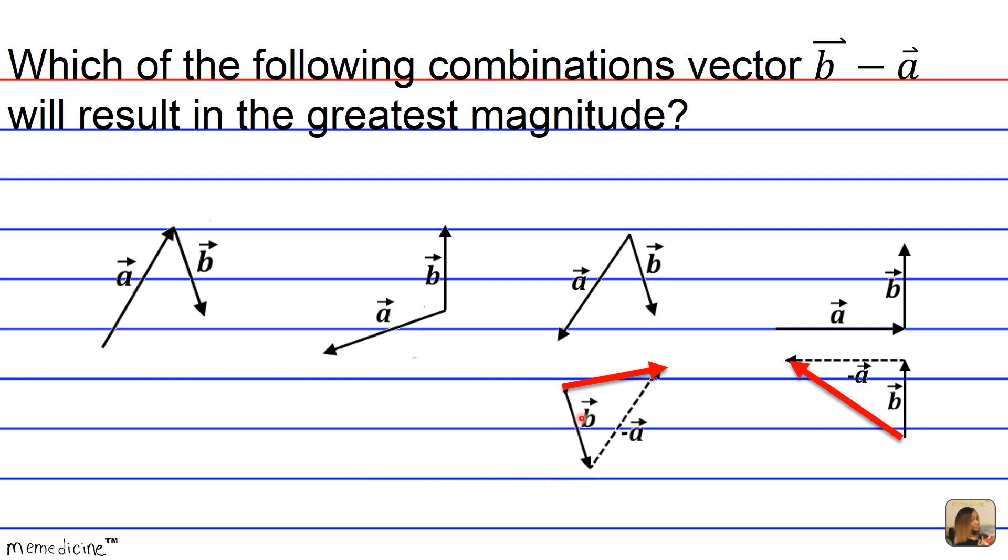So answer choice D is probably going to be eliminated. Well, it is already eliminated because this seems to be greater than this. Although we're talking about the displacement, we're just concerned with how much ground is traveled, so we're probably actually talking about distance. So displacement might be a misnomer, but whatever, we'll roll with it.